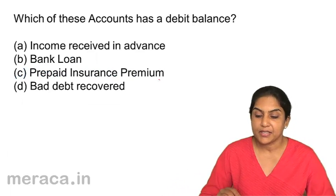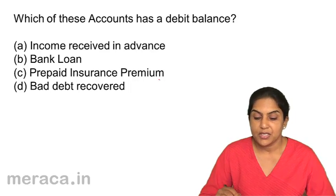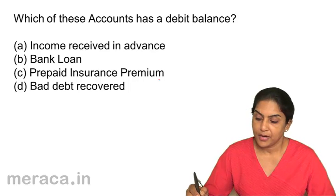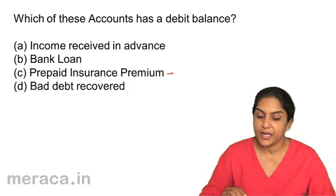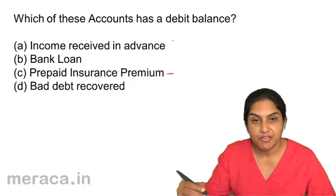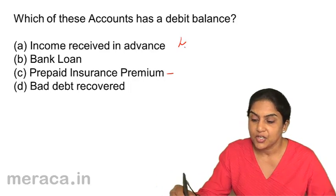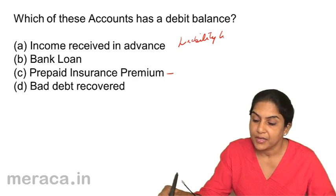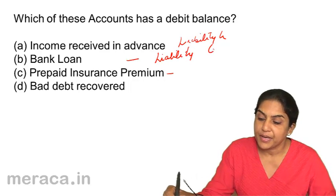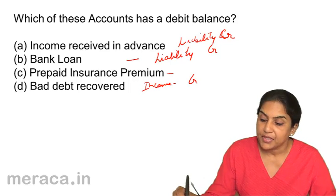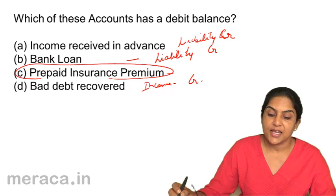Next: which of the following accounts has a debit balance? A. Income received in advance, B. Bank loan, C. Prepaid insurance premium, D. Bad debt recovered account. Correct answer: Prepaid insurance premium. Income received in advance means we have received income in advance and have a liability to render services, so it has a credit balance. Bank loan is again a liability, therefore credit balance. Bad debt recovered is an income, so it will also be credit. The correct answer is C: Prepaid insurance.